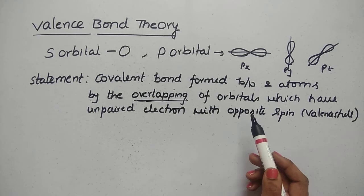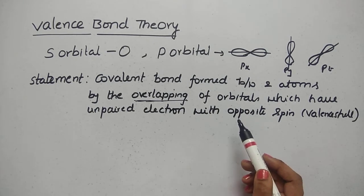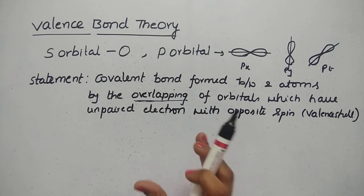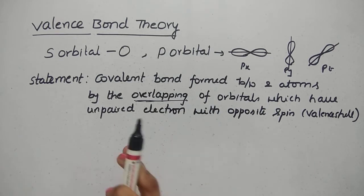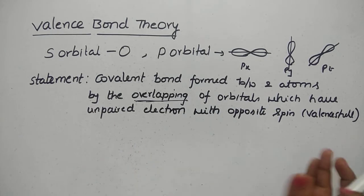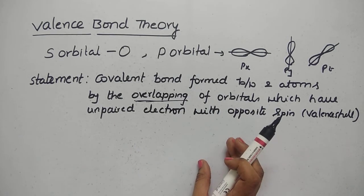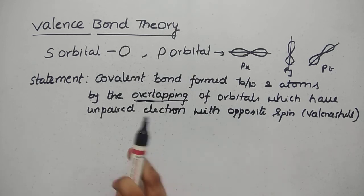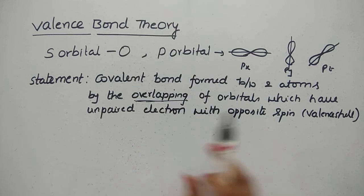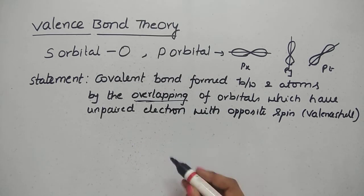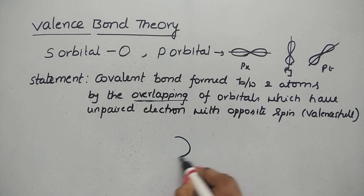Each atom has an electron in its outermost shell. These atoms have unpaired electrons in their outermost shell. Those unpaired electrons with different spins overlap to form a covalent bond.